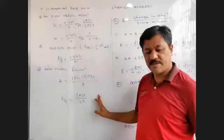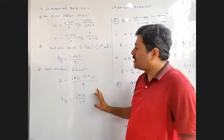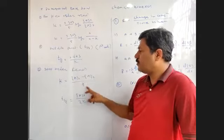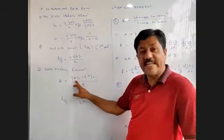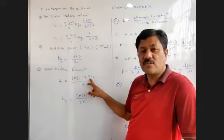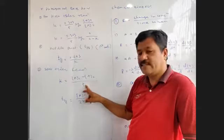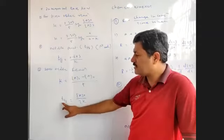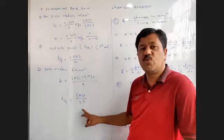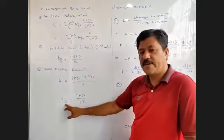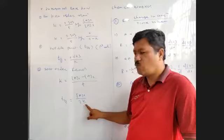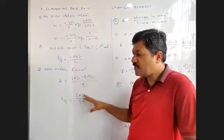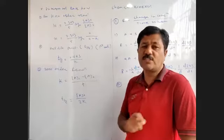Again, for zero-order reaction: the integrated rate law is k = (A₀ − Aₜ)/t. K is the rate constant, A₀ is the initial concentration of the reactant, Aₜ is the final concentration remaining after time t, and t is the time. The half-life period for zero-order reaction is t½ = A₀/(2k). This is the last formula — the Arrhenius equation.